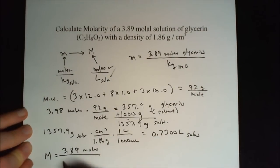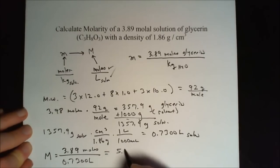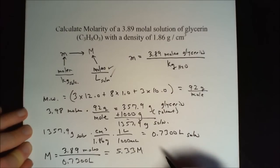We calculated our liters of solution. Moles per liter is molarity. That gives us 5.33 molarity, glycerin in water.